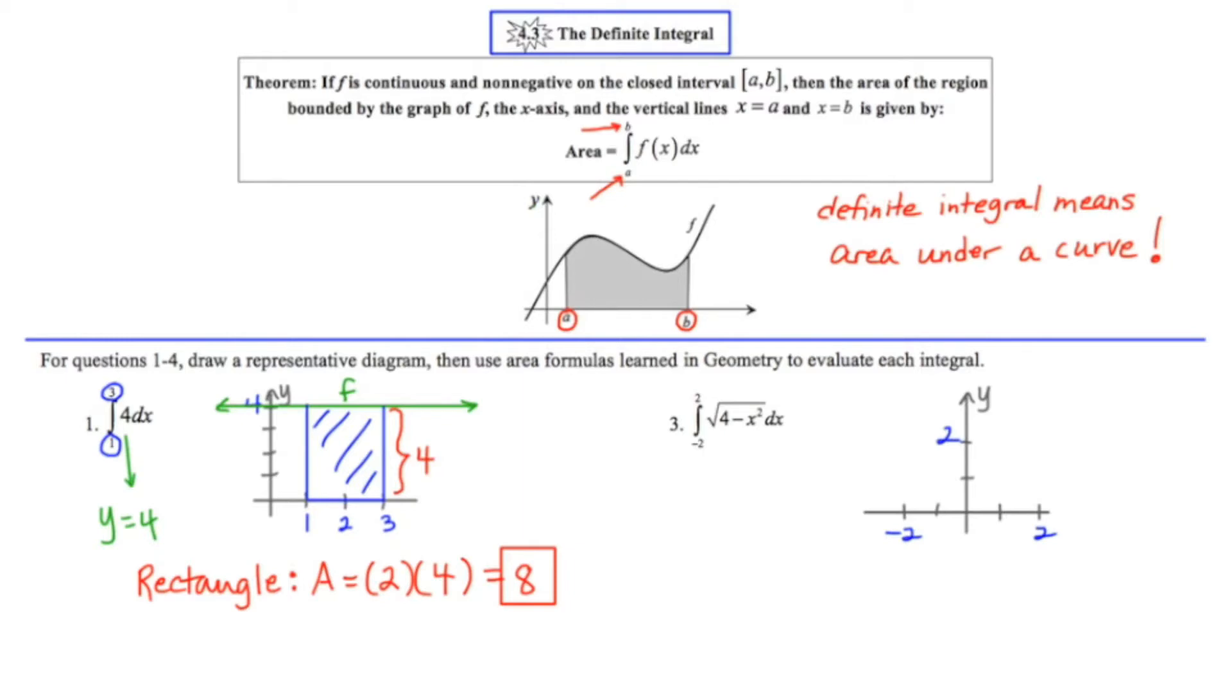Moving to example three, our function is no longer a line but it is the square root of four minus x squared. Now you may remember from a pre-calculus course that this function represents that of a semicircle with radius two. I'm going to go ahead and draw that semicircle. So this semicircle represents my function f and I'm starting at negative two and I'm ending at positive two. So I want to find the area under this curve which is essentially this semicircle.